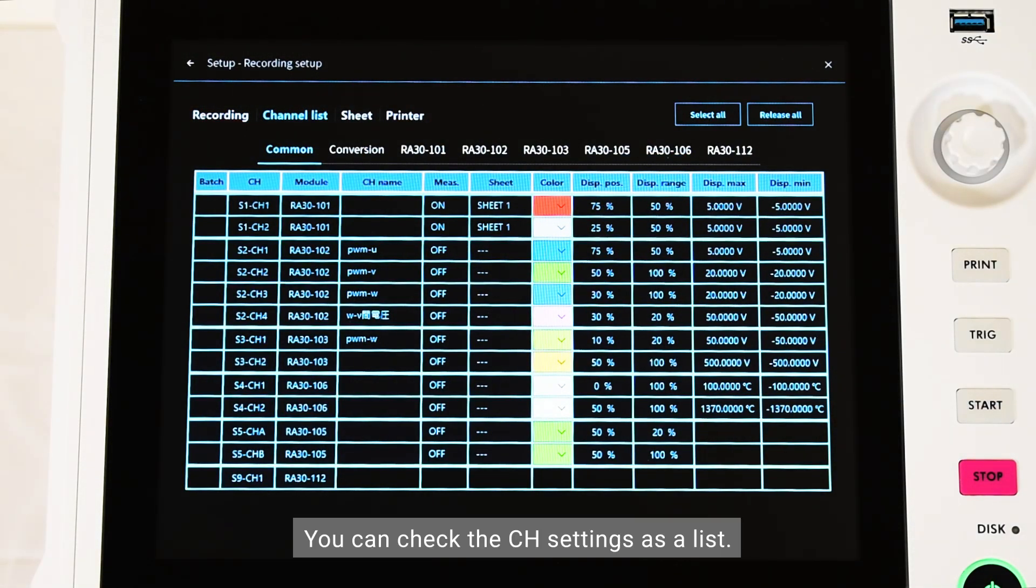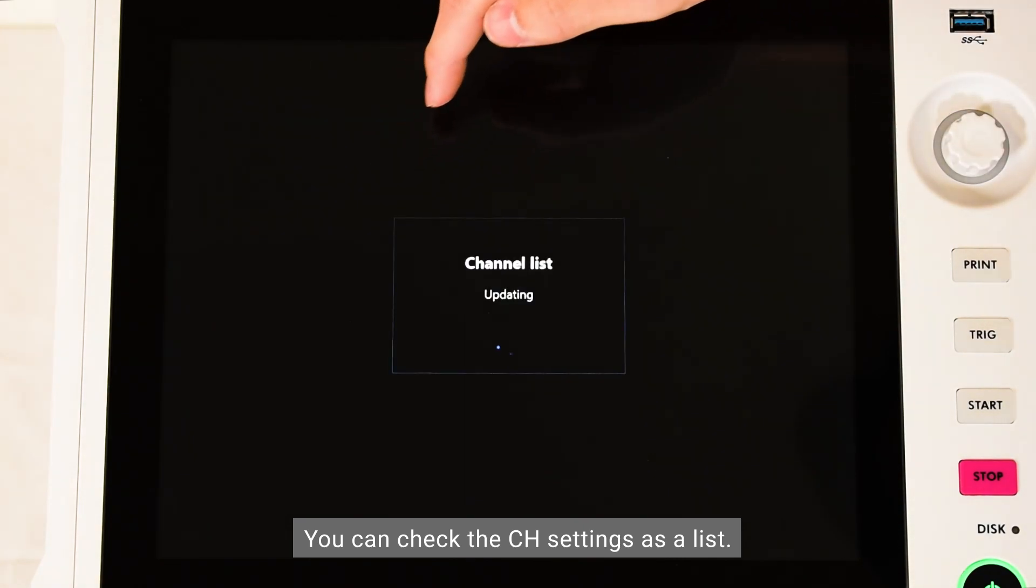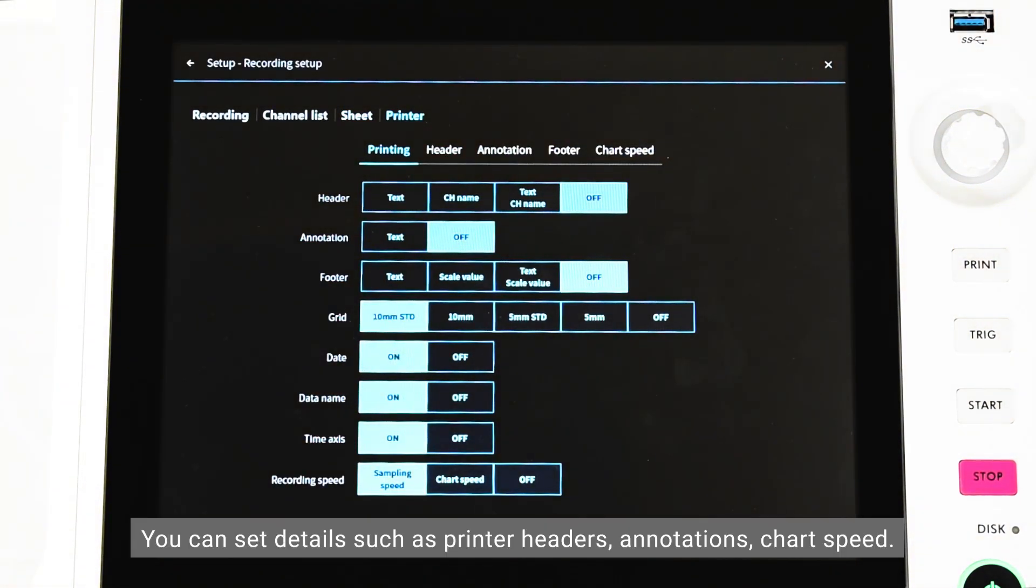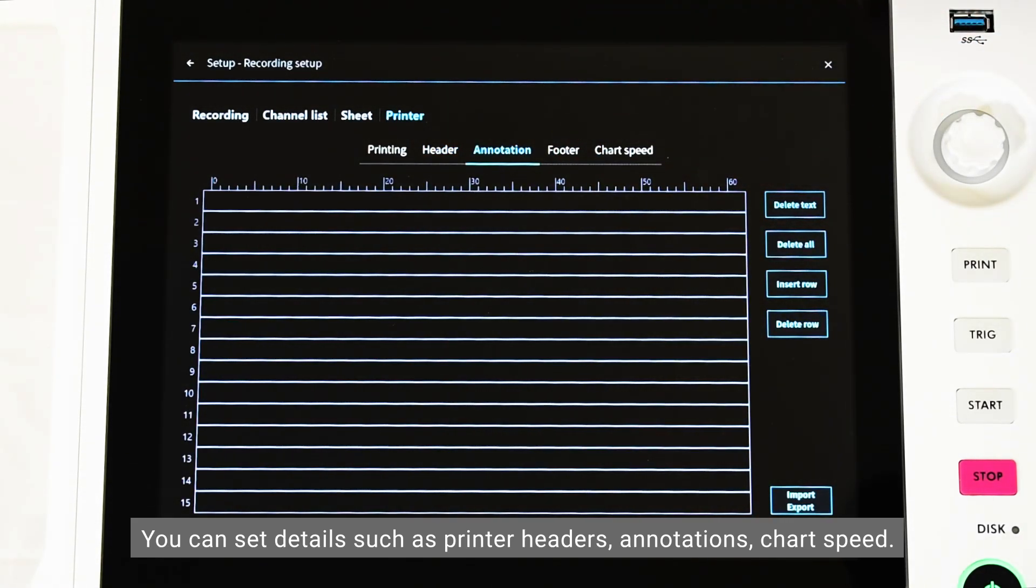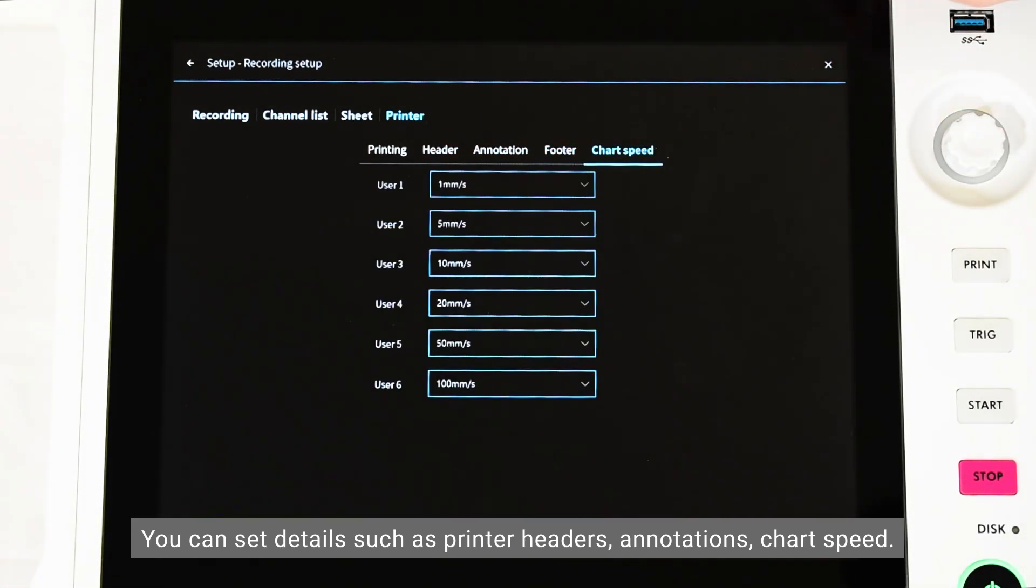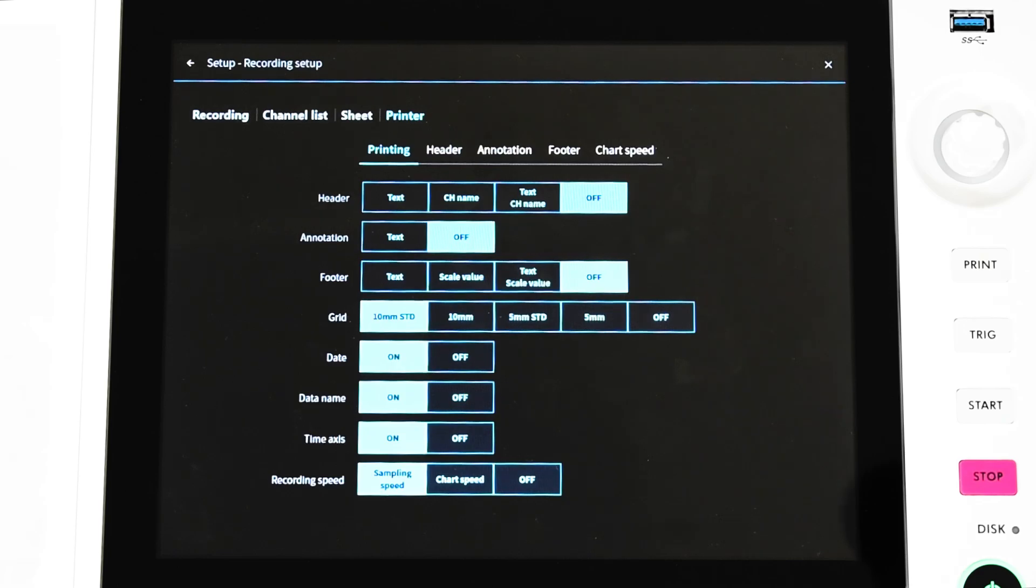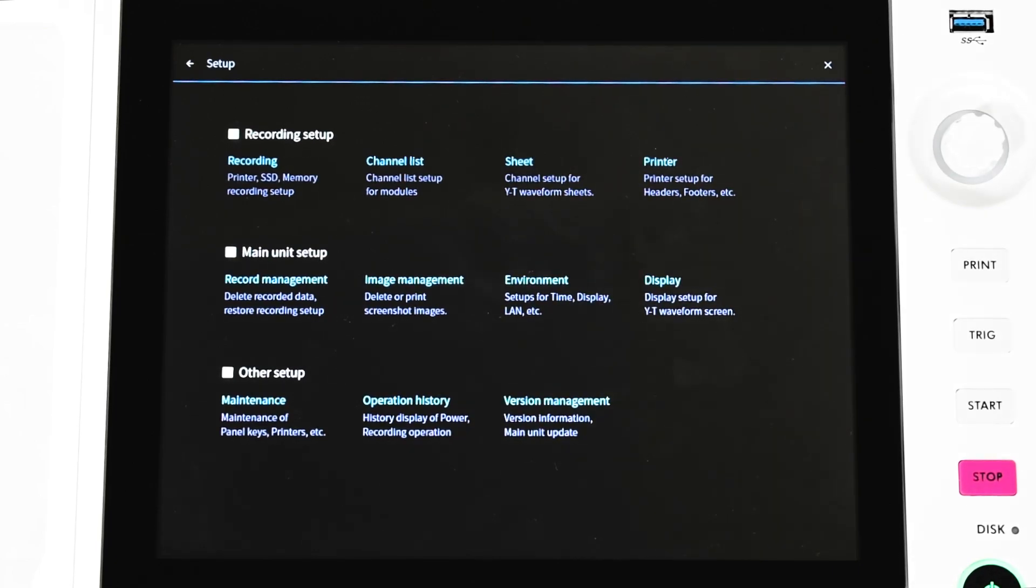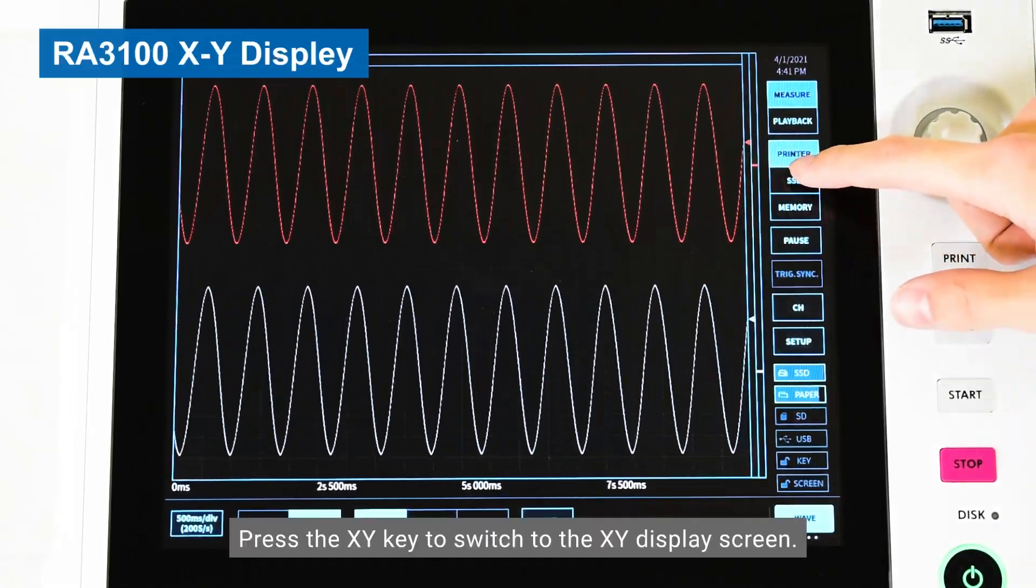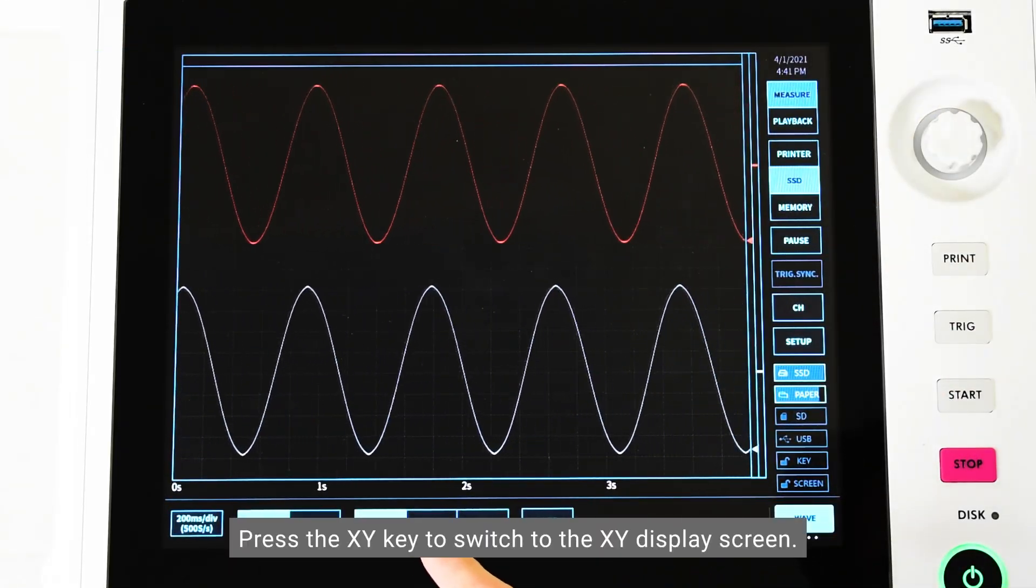You can check the CH settings as a list. You can set details such as printer headers, annotations, and chart speed.